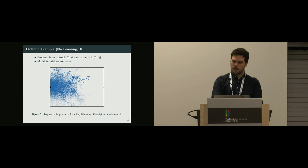If we look at our algorithm without resampling, here note that there's no learning, so there's no value function. The proposal for the action is only 2D isotropic Gaussian, and the model transitions are known. So if we just sample from it, we just have a reweighted random walk, but at least we go on both sides of the wall.